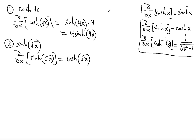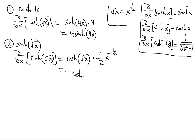Then we take the derivative of the square root of x. Square root of x can be written as x to the power of 1/2, so its derivative is (1/2) x to the power of −1/2, bringing the power down and decreasing it by 1. Simplifying gives cosh(√x) divided by 2√x, since x to the −1/2 means √x is in the denominator.